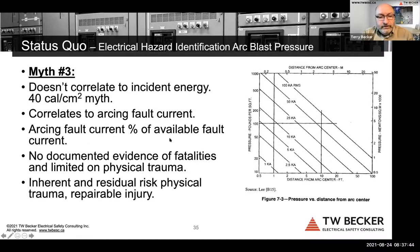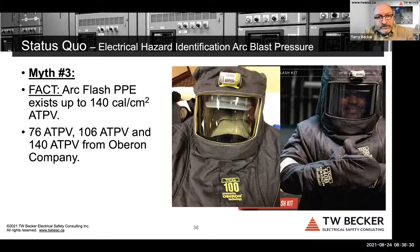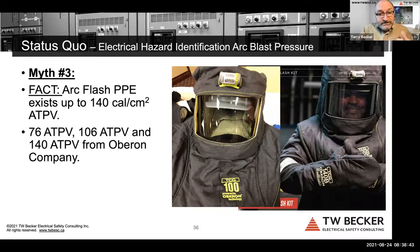There are no documented fatalities due to arc blast pressure. Residual risk related to blast should be assessed as physical trauma and repairable injury. As for Myth 3's claim that no PPE exists above 40 cal — that is false. PPE exists up to 140 cal/cm². Oberon Company's Arc 100 true-color gray arc flash suit is rated at 106 cal/cm², and their 140 cal/cm² flash suit has been available for over 15 years. This PPE performs the same as lower-rated PPE in terms of 50% probability of onset of a secondary burn injury.